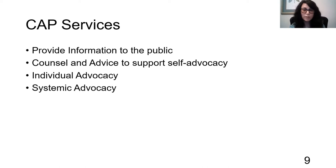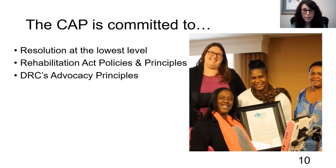We also do a lot of systemic advocacy, working with state leadership and the Department of Rehabilitation to make changes that improve people's access and quality of services. Within the CAP program, one of our commitments is to resolve issues at the lowest level possible. Generally our advocacy begins with a phone call to the DOR office, and many times we're able to resolve concerns just by speaking with a counselor or another DOR staff member. We work within the Rehabilitation Act policies and principles: to empower individuals with disabilities to maximize employment, economic self-sufficiency, independence, inclusion, and integration into society.